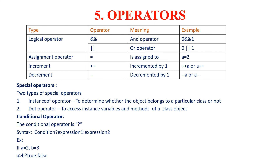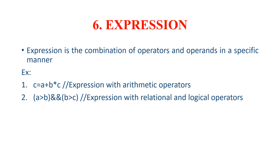The conditional operator syntax is: condition, expression 1, expression 2. For example, taking A as 2 and B as 3, with the condition A greater than B — since 2 is not greater than 3, it gives false. The last one is expressions. Expressions are nothing but the combination of operators and operands. For example, C = A + B * C is an expression with a combination of arithmetic operators.